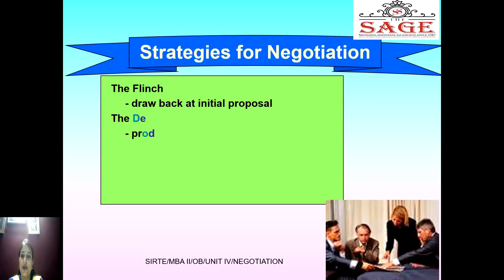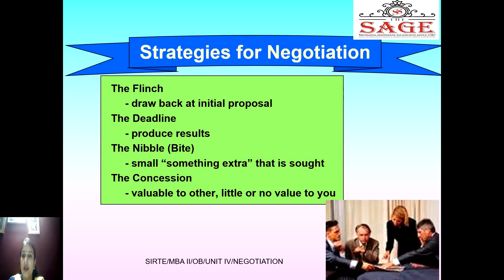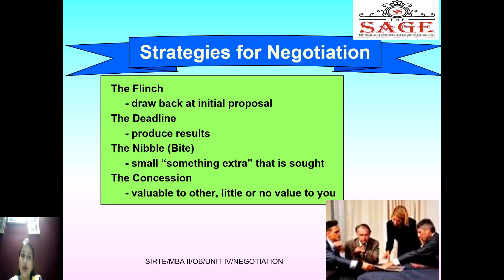Now, the strategies for negotiation: there are four strategies. First is the flinch — drawback at the initial proposal. Second is the deadline — a deadline can be given to produce results; if the other party cannot meet it, the deal is yours. Third is the nibble — getting something extra, small or big, as an added offer. Fourth is the concession — offering something valuable to the other party but of little or no value to you.